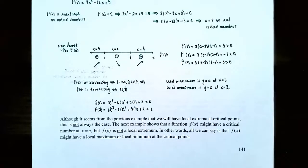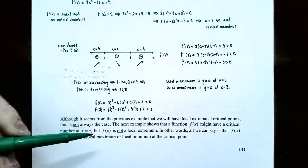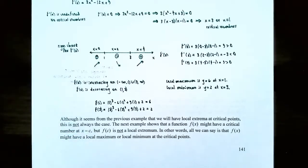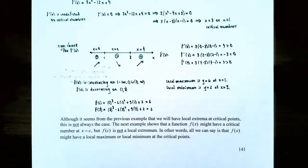It might seem like there's a local max or min at every critical number, but that's not the case. Critical numbers may not give you a local max or local min. You may be on the way up to a local max or on the way down to a local min — that will be a critical number, but it's not a local max or min. In the next example, we'll find a function with a critical number that is neither a local max nor a local min.